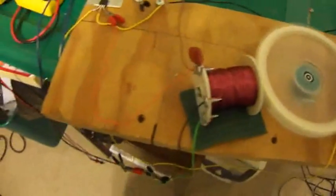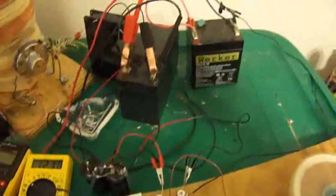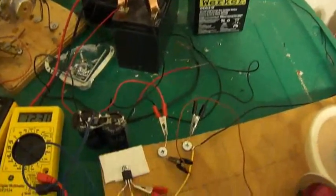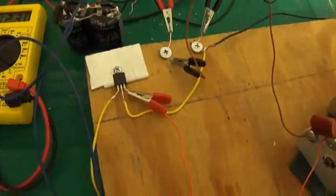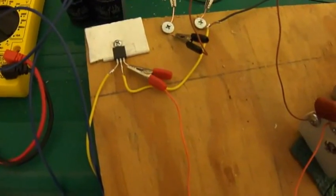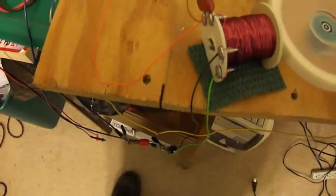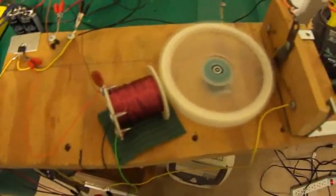And I do have the voltage doubler connected back to the run battery. So I've got the run battery coming through the transistor, through the reed switch, through the coil, and of course back to the other side of the battery.